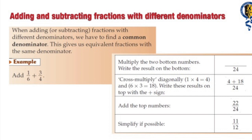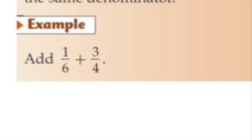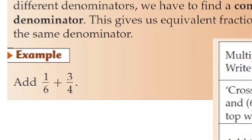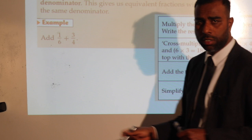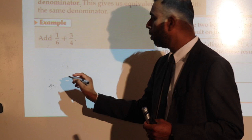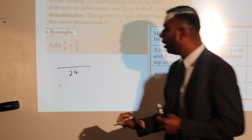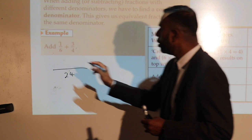Going over some of the basic skills: if you get two fractions with different numbers at the bottom — different denominators — the first thing that needs to happen is to find a common number, which we call a common denominator. So one sixth plus three quarters — they're both different denominators. My first job is to find a common denominator. To find a common denominator, I will multiply the two numbers: 6 and 4 makes 24. This is your common denominator, or what we call our lowest common multiple.